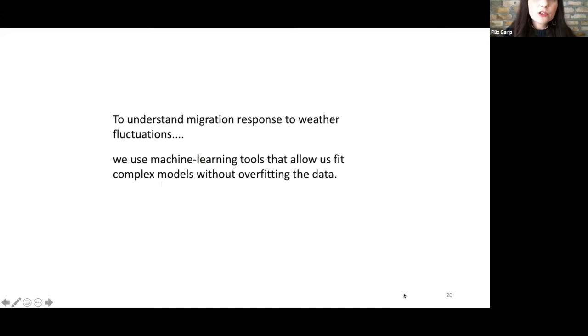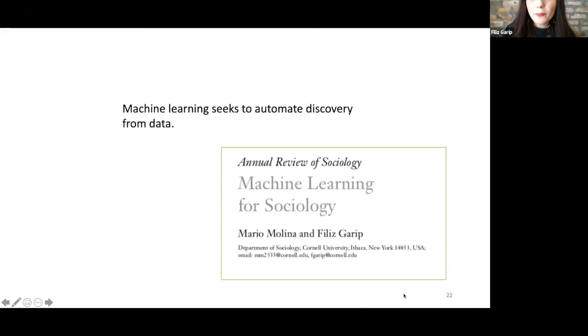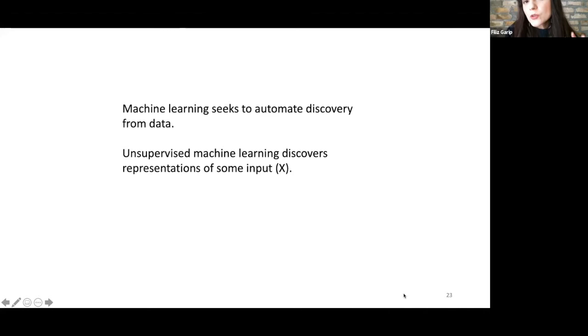In the first part of the project, spearheaded by Mario, we're using machine learning tools that allow us to fit really complex models without overfitting the data. Machine learning is a fast-growing field. It sits at the intersection of computer science and statistics, and it basically seeks to automate discovery from data. In the past, intelligent systems tried to code all outputs for all possible inputs. But nowadays, intelligent systems are actually learning from data by estimating these really complex functions. We wrote a review piece for the annual review of sociology on this topic that applies to many social science fields. In that review, we basically distinguish between two classes of these tools.